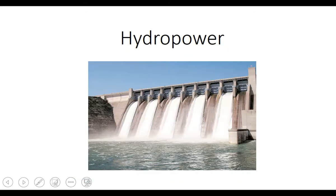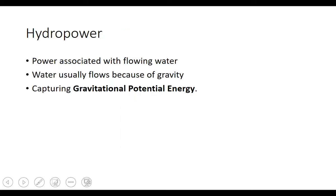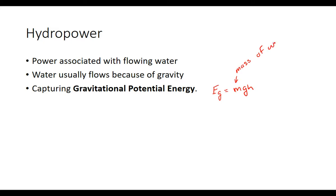We're going to start with hydropower. Hydropower focuses on energy that comes from dams — that's the main way we gather it. It's power associated with flowing water. We capture the kinetic energy of the water as it flows through the dam, and the water flows because of gravity. So what we're really capturing is gravitational energy: mgh, where m is the mass of the water, g is 9.8 m/s², and h is the height of the dam.